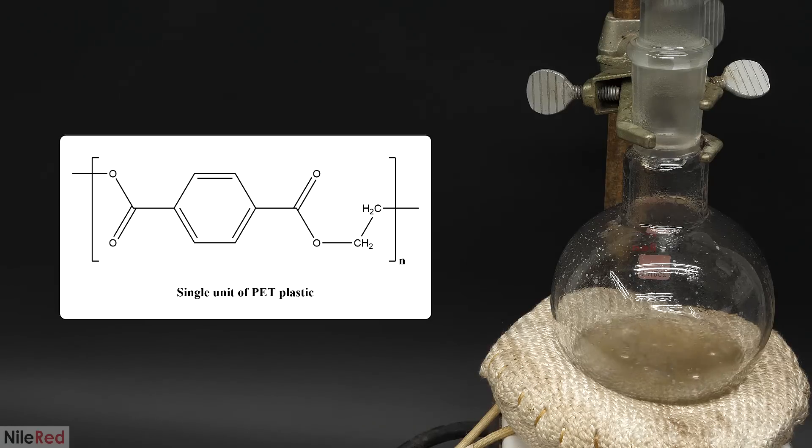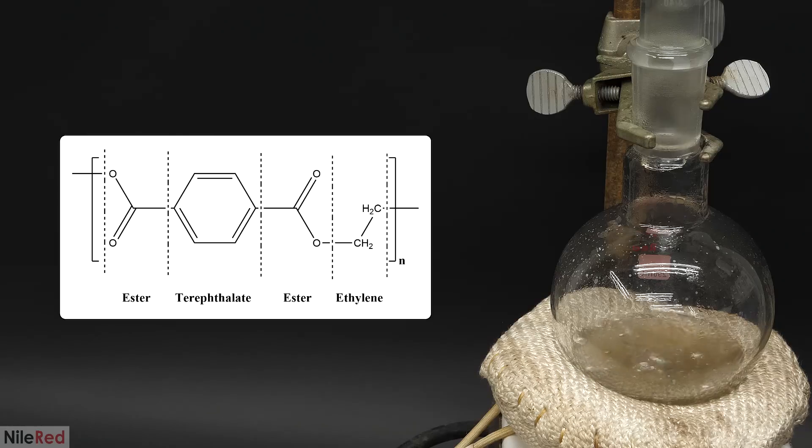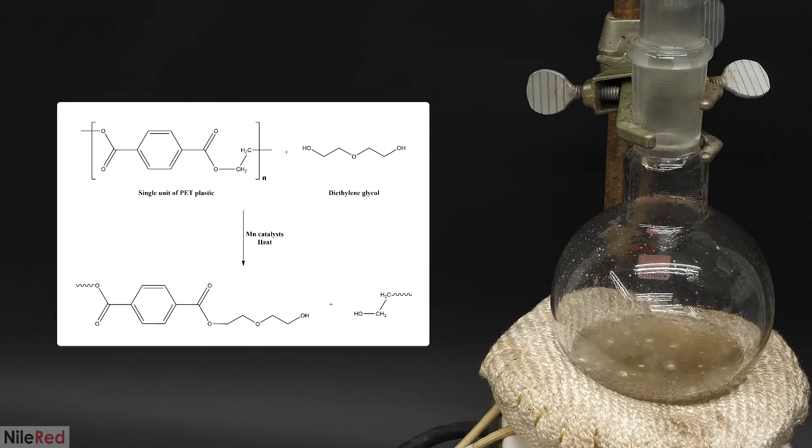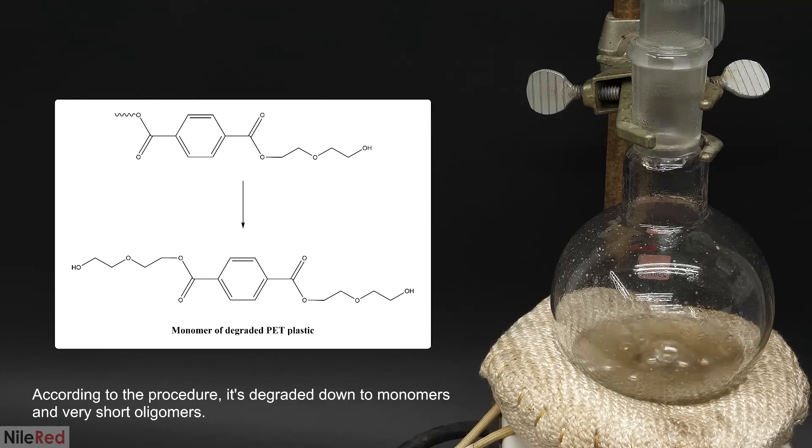PET plastic is a long repeating chain of ethylene glycol and terephthalic acid groups, all bound together by ester bonds. And what I'm doing here is breaking apart this chain, in a process called transesterification. With strong heating, and in the presence of the manganese catalyst, the diethylene glycol starts to attack the PET. It competes with the ethylene glycol for the terephthalic acid, and it's able to kick it out and replace it. This makes a new ester bond between the terephthalic acid and the diethylene glycol, and the PET chain is broken at this point. As the reaction continues, this happens in more and more places, and the polymer is slowly degraded.